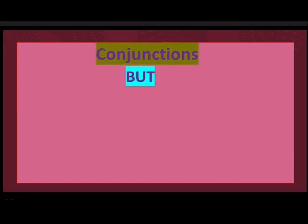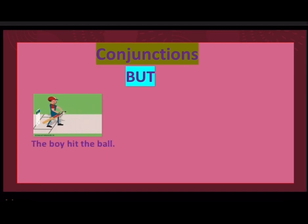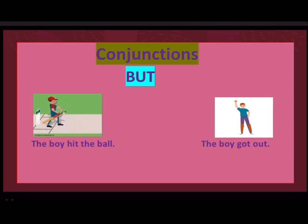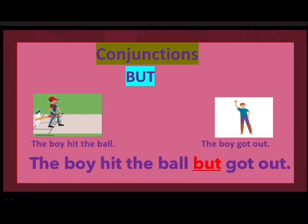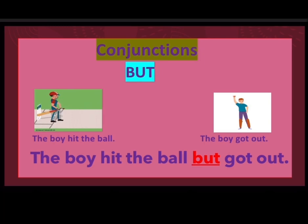Let us learn the next conjunction, that is 'but.' Look at the picture. The boy hit the ball. The boy got out. The boy hit the ball, but got out. Here, we have used the conjunction 'but' to join these two groups of words, to show that these sentences have opposite ideas. The boy hit the ball, but finally he got out — these are two opposite ideas.